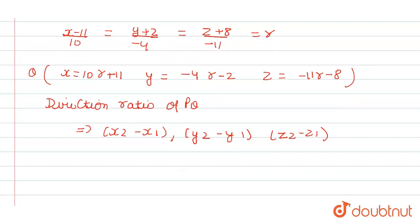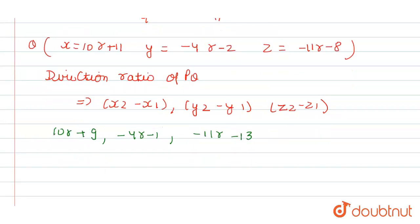So when we use this formula, our direction ratio of PQ will become (10R + 9), (-4R - 1), (-11R - 13). Now we have direction ratio of line L given as 10, -4, -11.